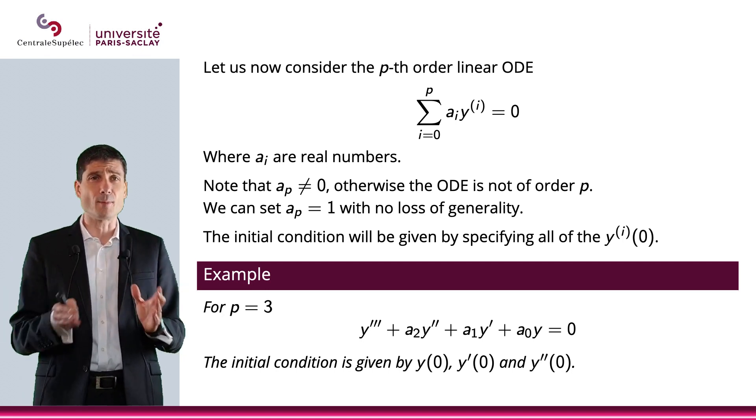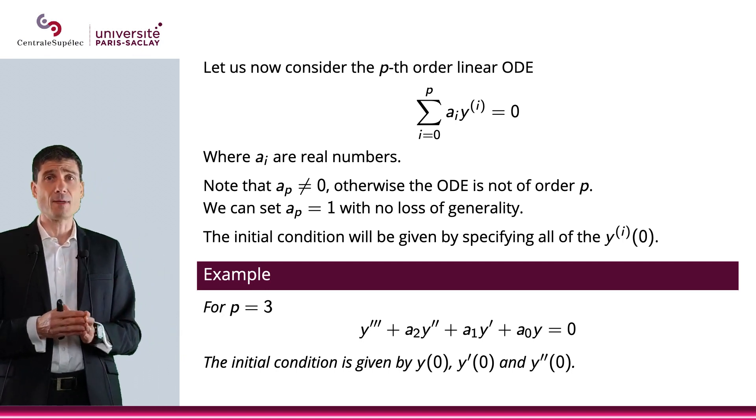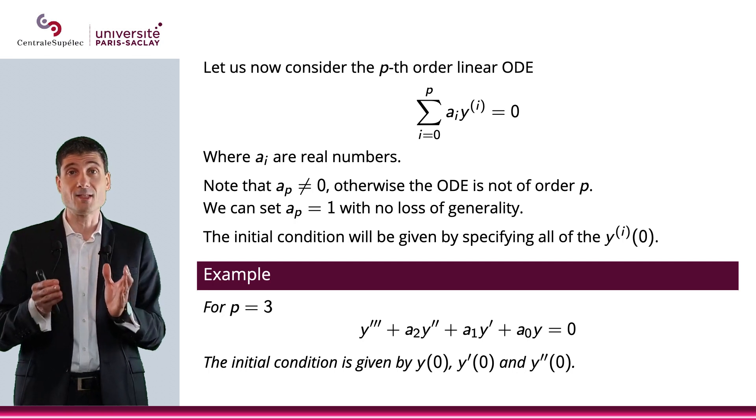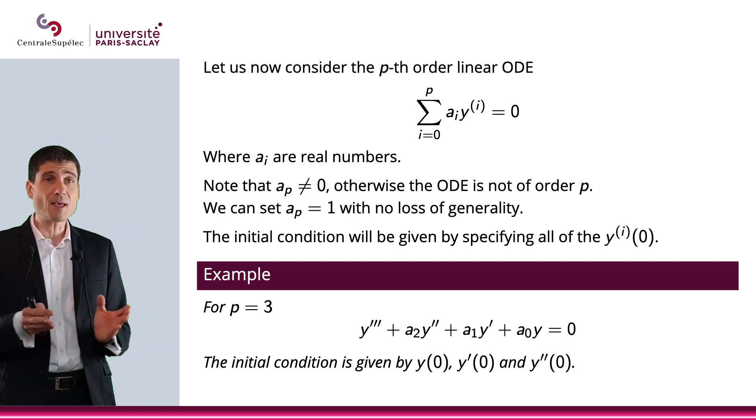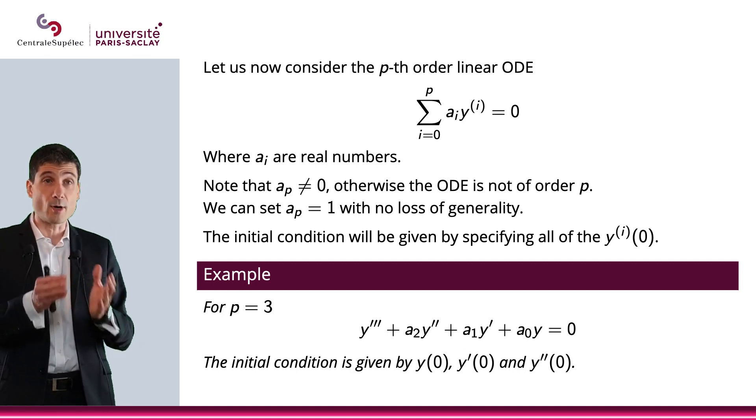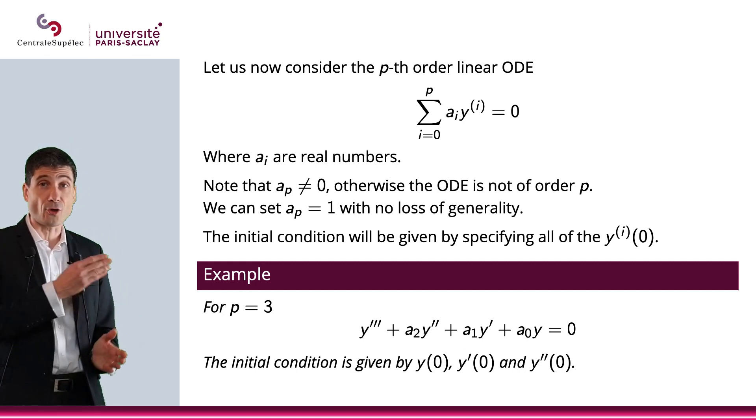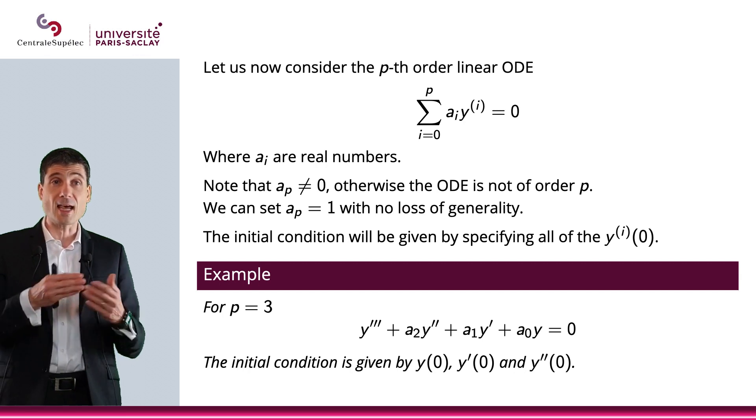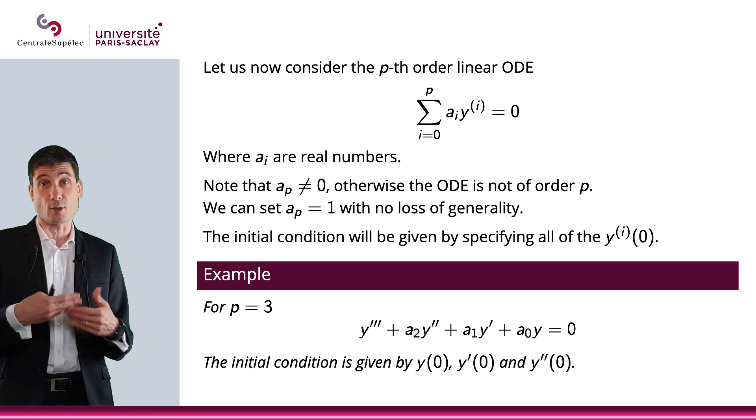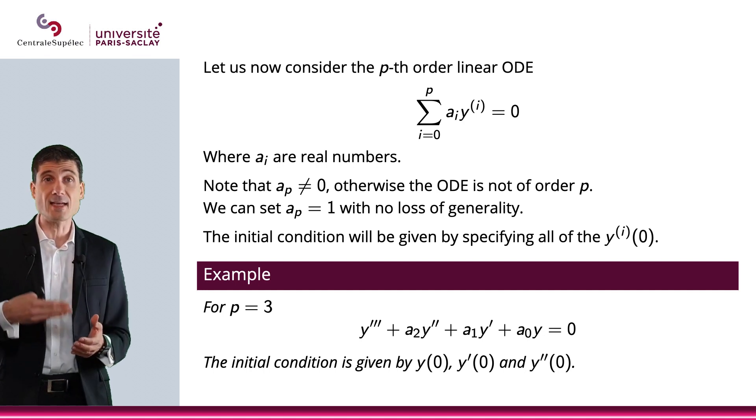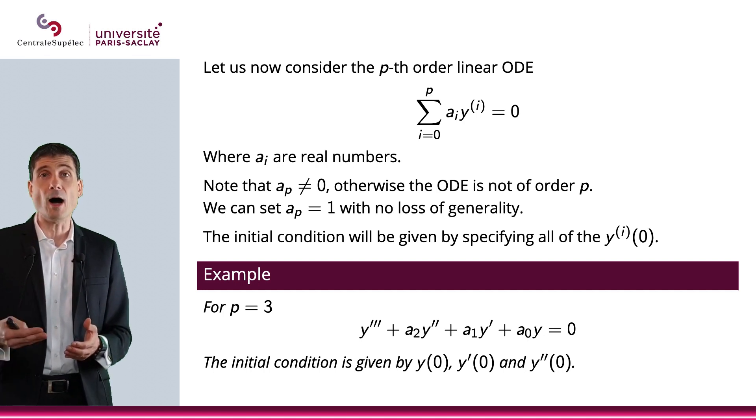Let me just give you an example, because all these notations can be confusing, while there is absolutely no difficulty at all. For p equal to 3, the equation I will consider is the third derivative of y, plus a_2 times the second derivative of y, plus a_1 times the derivative of y, plus a_0 times y equals 0.